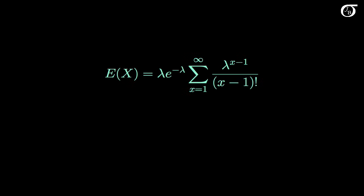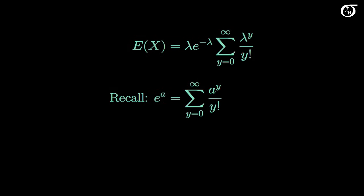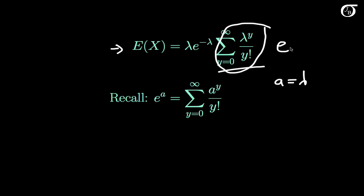We've shown that our expectation of x is equal to this expression. We're going to see that the summation is the series expansion of e to the lambda. To make that clearer, I'm going to let y equal x minus 1, giving a y factorial in the denominator and lambda to the y in the numerator. When x equals 1, y equals 0, and as x tends to infinity, y also tends to infinity. So our expectation of x boils down to lambda times e to the minus lambda times the series expansion of e to the a, which with a equaling lambda gives us e to the lambda.